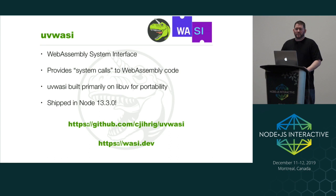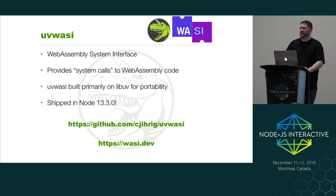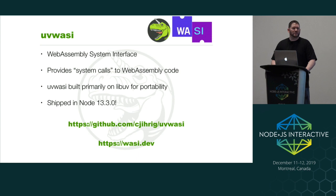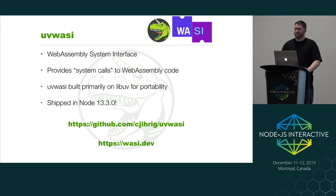I want to finish with UVWASI. WASI is the WebAssembly System Interface — relatively new, came out within the past year. It basically gives WebAssembly applications a way to access the underlying operating system, since by default WebAssembly code is sandboxed. As a LibUV maintainer, when I first heard about WASI I thought it sounded like LibUV for WebAssembly, so I built it on top of LibUV for maximum portability. As of Node 13.3, which came out in the past month or so, it's shipping in Node — you can do require('wasi') and play around with it. The GitHub repository and wasi.dev are good resources if you're interested. And that is all I have — thank you.